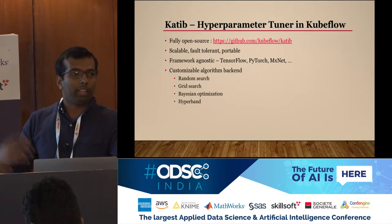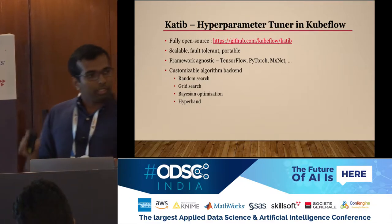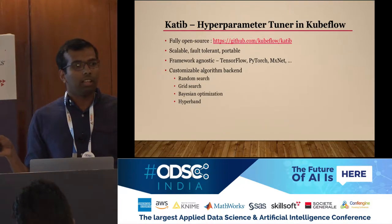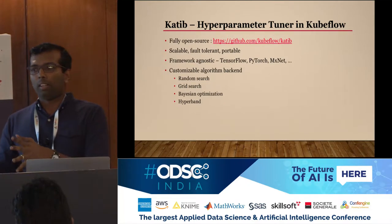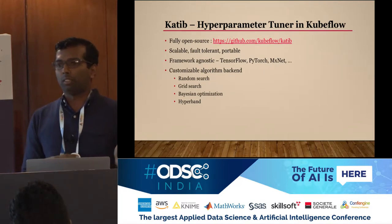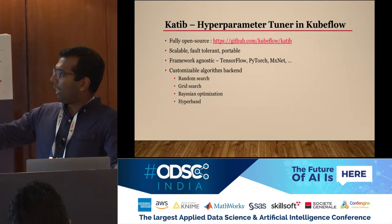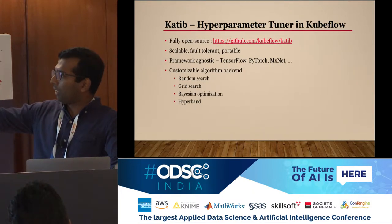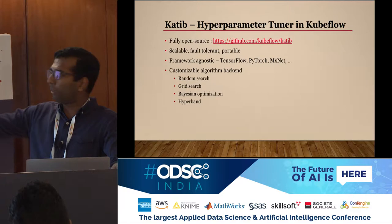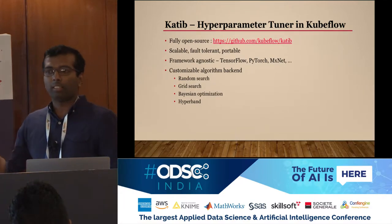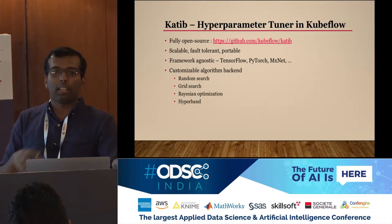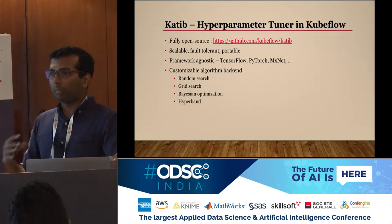You can scale up the system if you want more parallel jobs — it is infinitely scalable. It is also framework agnostic, so users can have programs written in their own languages and any framework. They just need to say: this is my program, these are the hyperparameters, these are the ranges I am looking for — give me the best hyperparameter values. By default, supported algorithms include random search, grid search, Bayesian optimization, and Hyperband. It also has a customizable backend, so if someone wants to try a new algorithm, you can add a service at runtime and it will work directly.